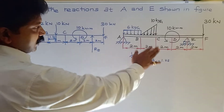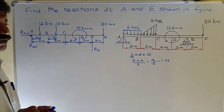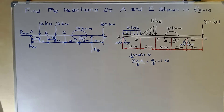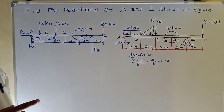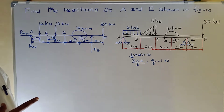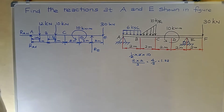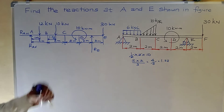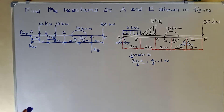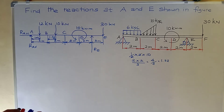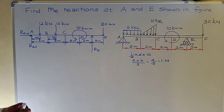Point C is 2 meters from B. After 2 meters, one couple is available. Note: consider the couple only while calculating Sigma MA — no need to include it as a vertical or horizontal force. At point E, reaction RE acts upward. At point F, a vertical downward point load of 30 kN is available.